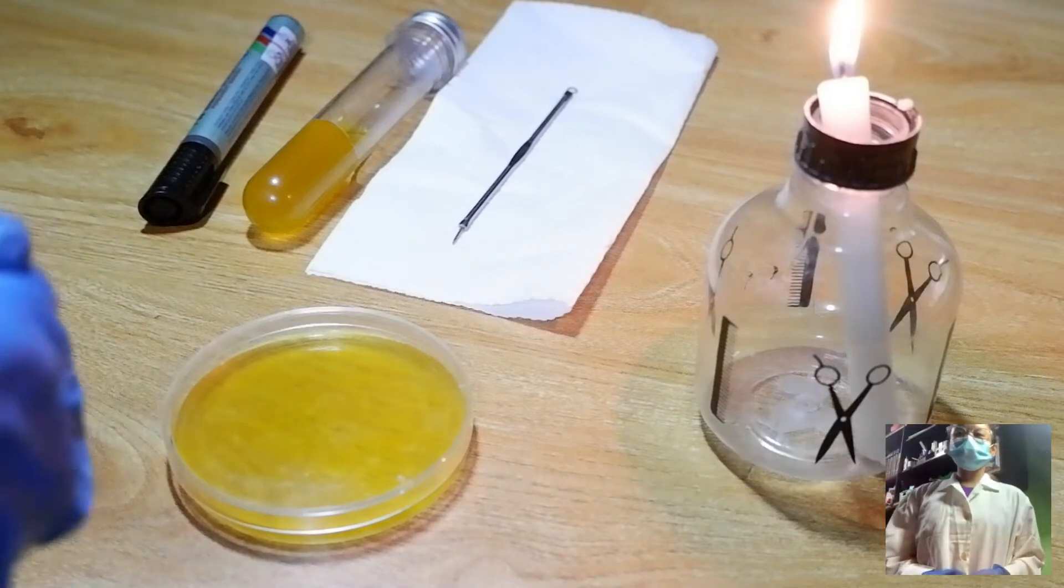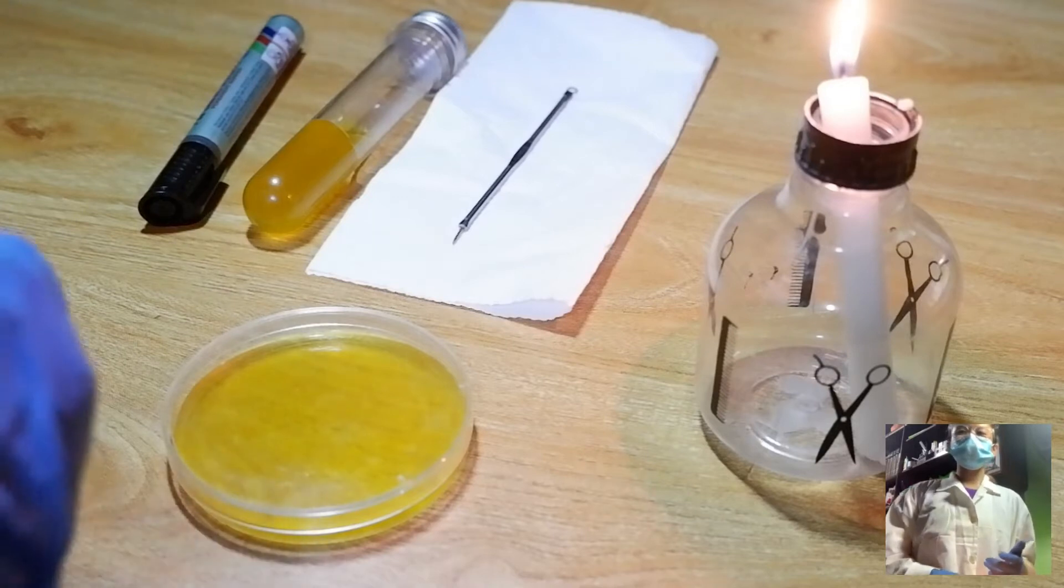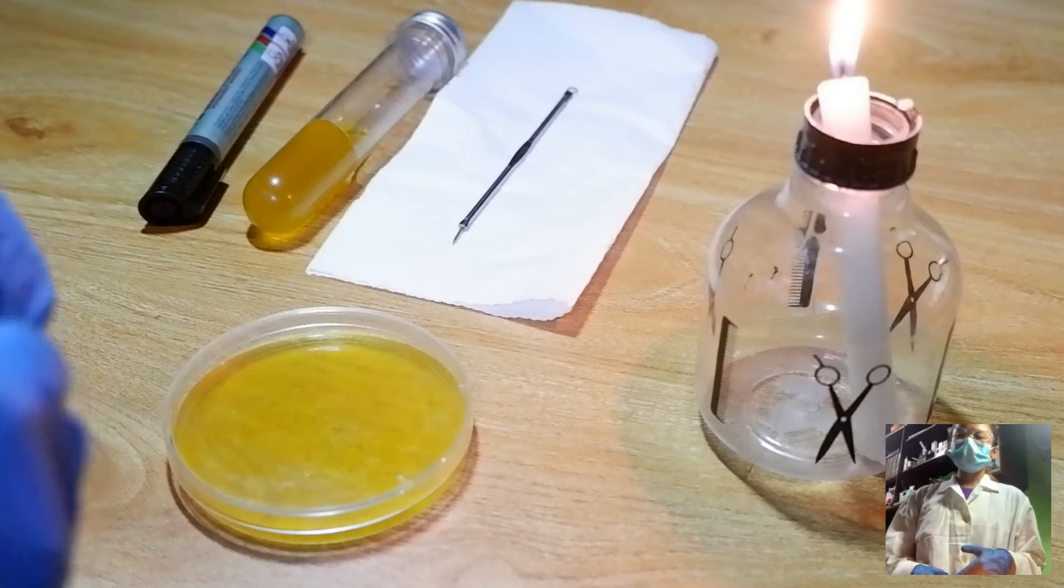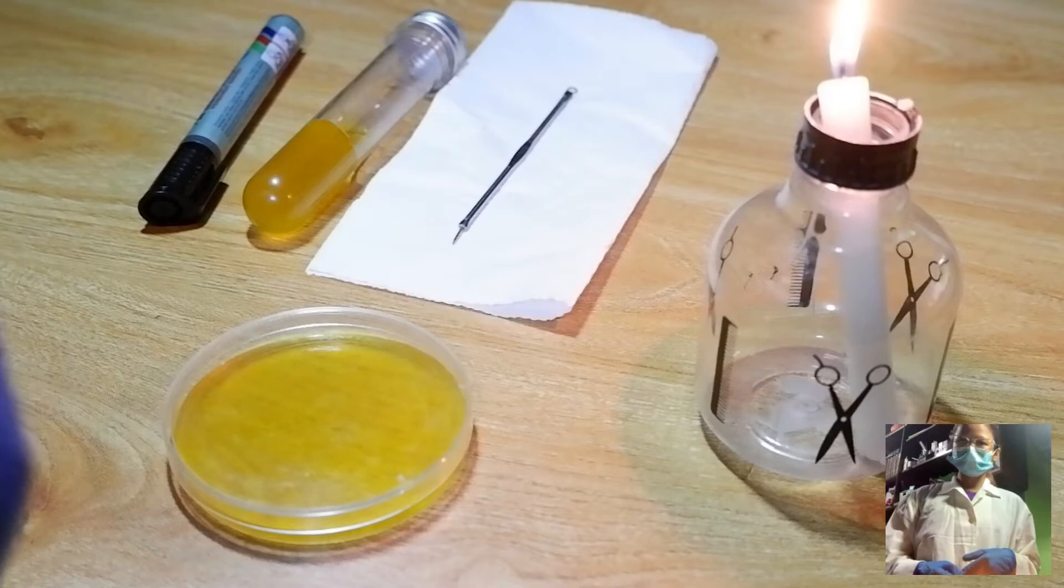At this point, I will demonstrate the quadrant-streaking technique. Our main purpose here is to isolate the mixed population into pure culture of most organism. This method allows sequential dilution of the original microbial material.